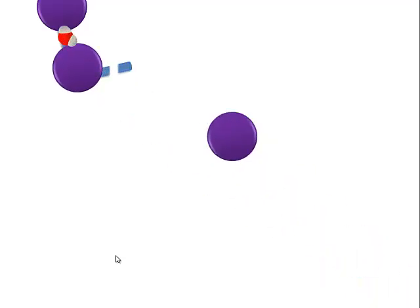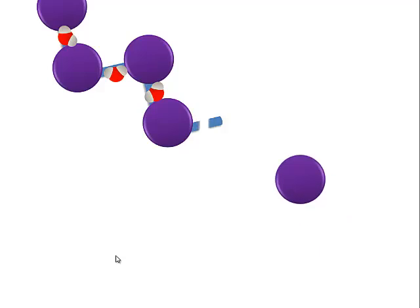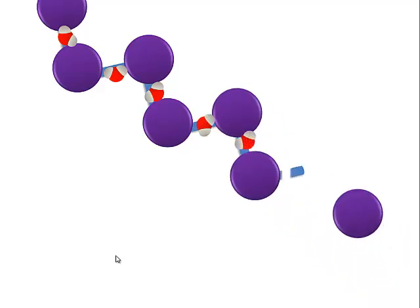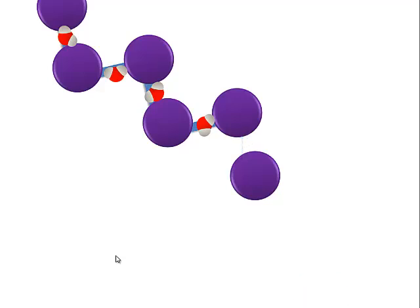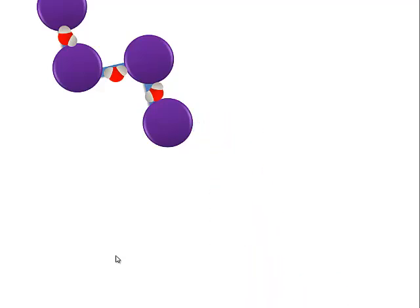So every time we take monomers and form covalent bonds to form a polymer, we're losing water molecules or dehydrating each chemical bond in dehydration synthesis. If we want to break the polymer down into the individual monomers, we put the waters back in, which breaks the covalent bond we just formed, and hydrolysis splits the thing apart.